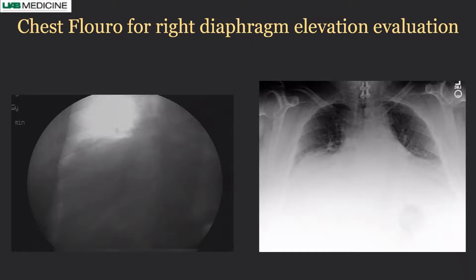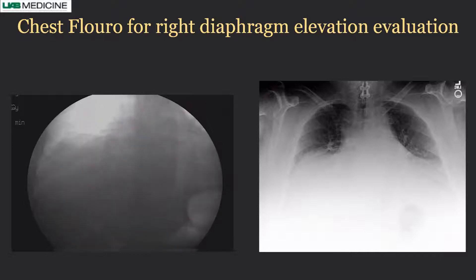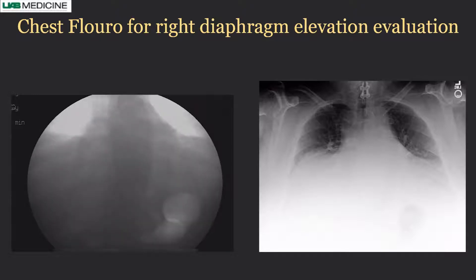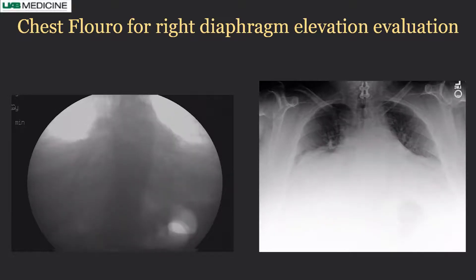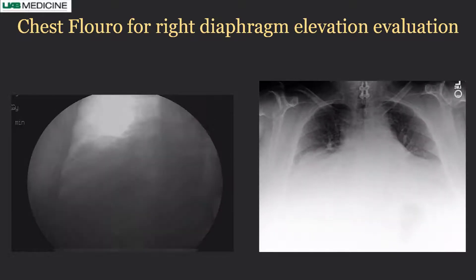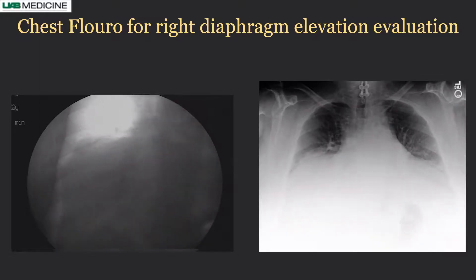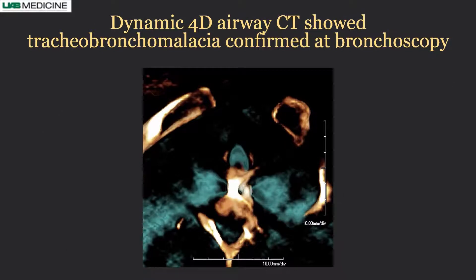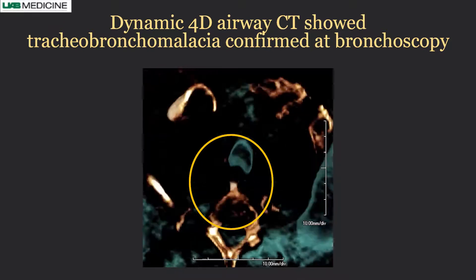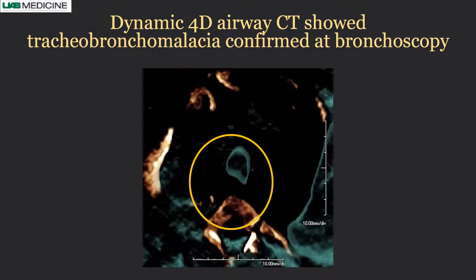We performed a regular fluoroscopy examination. Because of the patient's body habitus, it is difficult to see clearly, but the diaphragm is moving with regular breathing, just not very much. The DDR image clearly shows the right diaphragm below the large heart, and they are moving but not dramatically. The diaphragm was not the primary problem. We then performed dynamic 4D CT to evaluate her airways and found severe tracheobronchomalacia causing her symptoms.